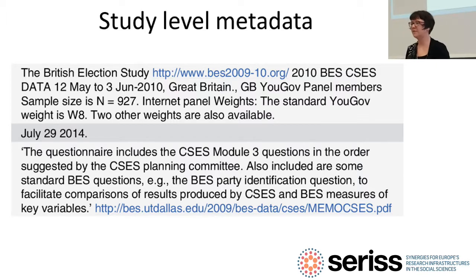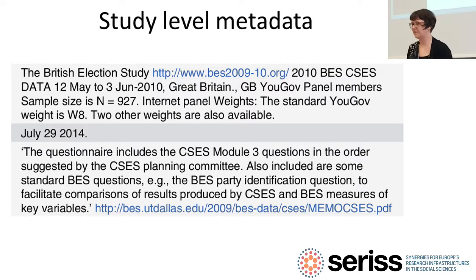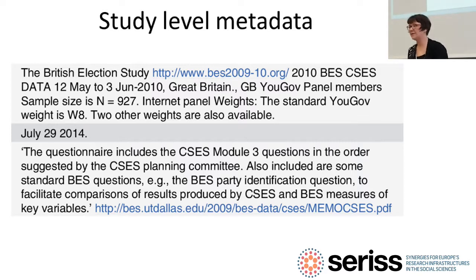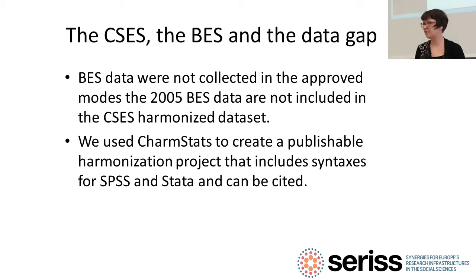Finally, the study information includes the name, version, where it can be found with its persistent identifier, who funded it, the collectors, and all of those sorts of things. In our case, we had the British Election Study — it didn't have an archived DOI, so I included the website and more information about the collection dates, the sample size, and who collected it in order to be transparent.